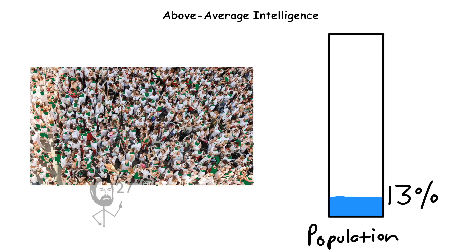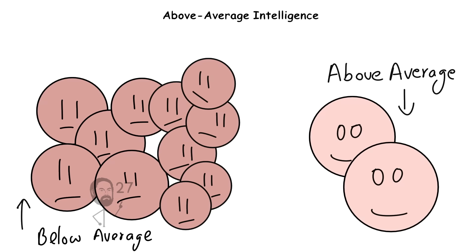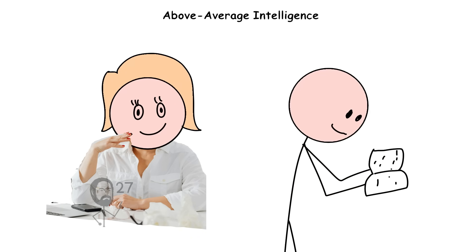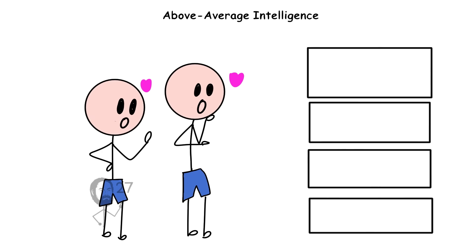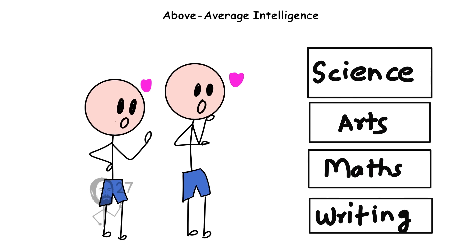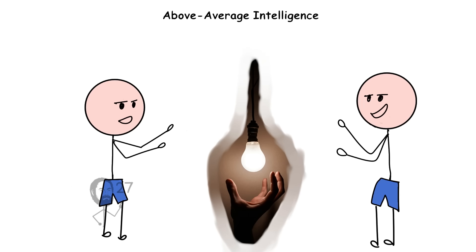Roughly 13% of people fall within this range, meaning above-average intelligence is not rare, but still distinct enough to influence lifestyle and learning style. Many individuals here show an early affinity for specific fields, science, art, mathematics, or writing, and often prefer tasks that involve analysis, design, or innovation.